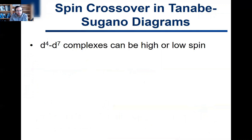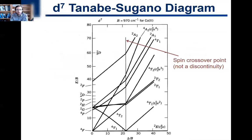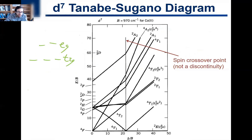The last thing to discuss is spin crossover in the Tanabe-Sugano diagram. D4 through D7 complexes can be high spin or low spin. Tanabe-Sugano diagrams show a change of spin that occurs upon increasing ligand field strength. Looking at D7 as an example in an octahedral field, let's draw out the low spin and high spin electron configurations.